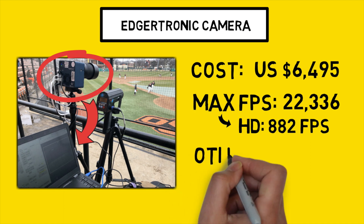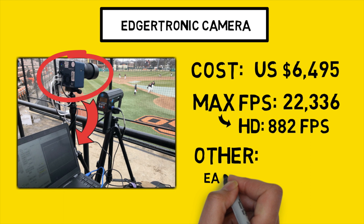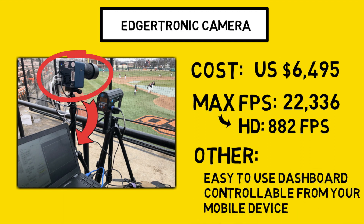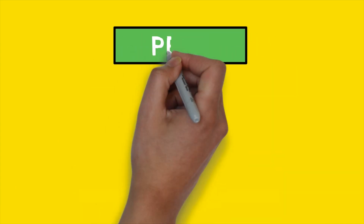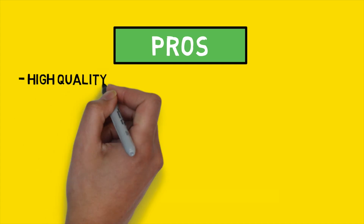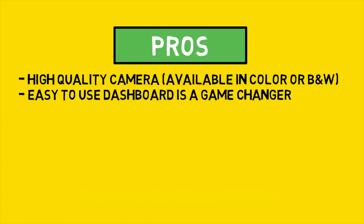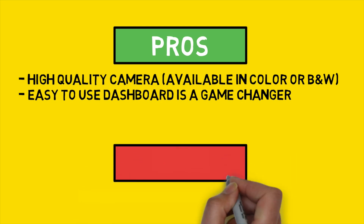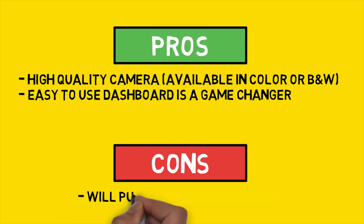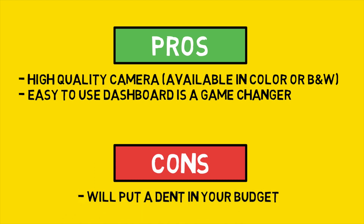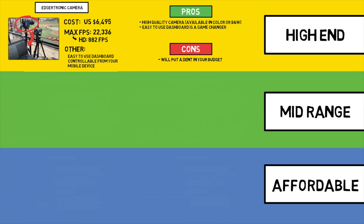One of the major pros of the Edutronic is that it's fairly intuitive through their web dashboard. This is a top-of-the-line camera capable of taking insane footage for a fraction of the price of cameras in the past, and its easy-to-use web interface makes it a breeze for people with little to no experience with professional cameras. The major con is that the price tag isn't going to work for every team, especially at the lower levels of the game.